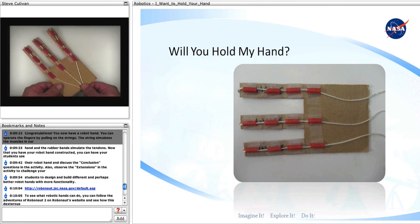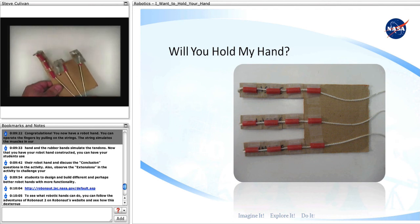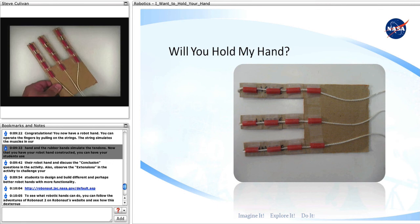Congratulations! You now have a robot hand. You can operate the fingers by pulling on the strings. The strings simulate the muscles in your hand and the rubber bands simulate the tendons.